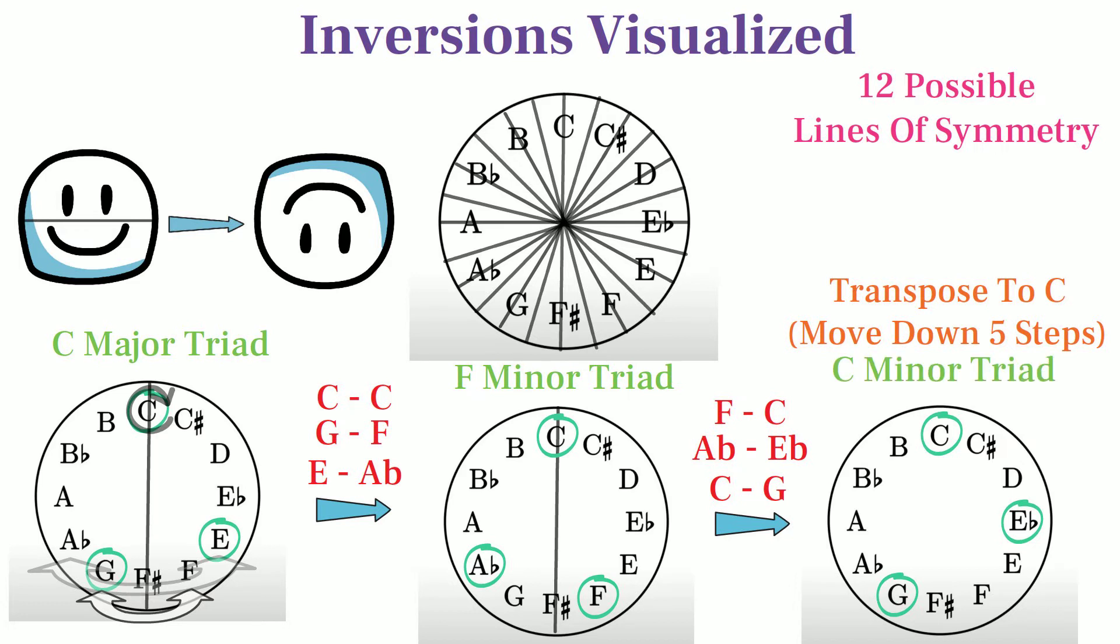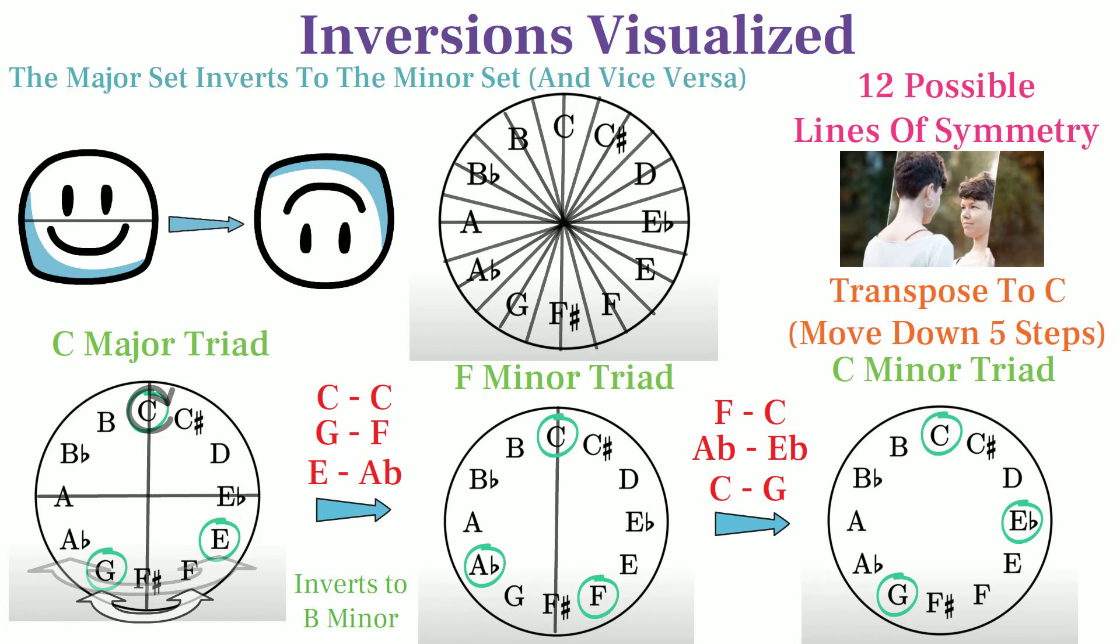The C major triad doesn't necessarily invert to any particular minor chord, as we could theoretically draw the line of symmetry in other positions and get many different resulting minor chords. But overall what is revealed is that the set of all major chords is inversionally related to the set of all minor chords. In other words, major and minor chords are mirror images of each other.